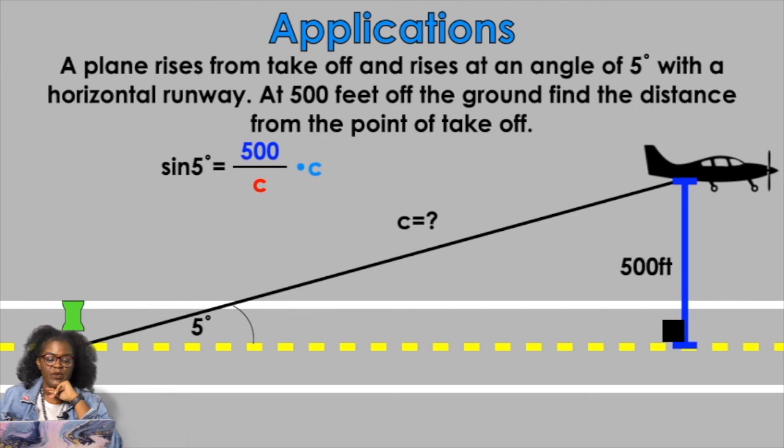So what we're going to do is we're going to multiply by C, multiply by C, so that I can get C on level, because I don't want it down there at the bottom. Right? And then when I multiply by C on both sides, I need to make sure that I find the sine of 5 degrees. Make sure your calculator is in degrees. 0.0872. So now what I'm going to go ahead and do with that is I'm going to get C by itself by dividing by 0.0872. And when I do that, I get 5,737 feet. Ta-da!